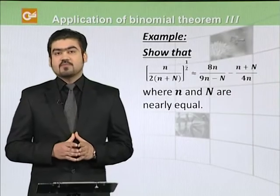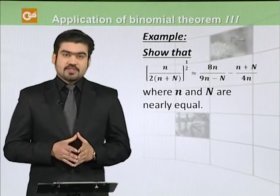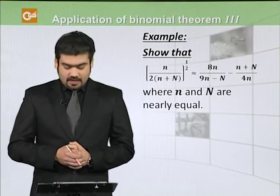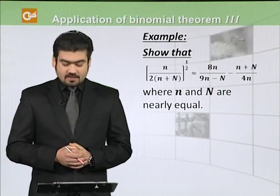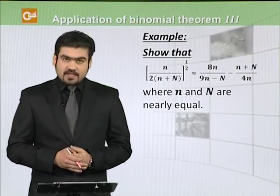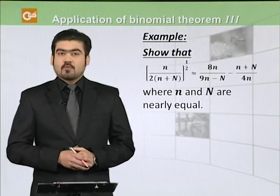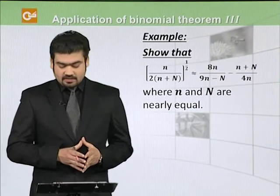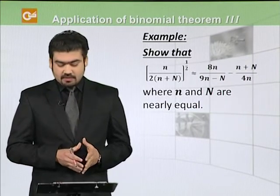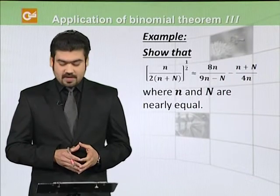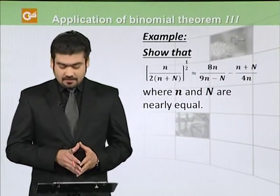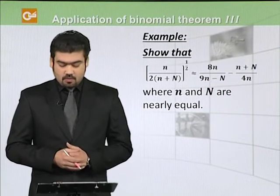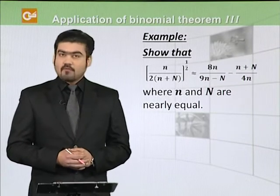Ab humare paas binomial expansion ki ek example hai. That is: n divided by 2, multiplied by (n plus capital N) whole raised to power 1 over 2. Hamna ye prove karna hai ki this is nearly equal to 8n divided by (9n minus capital N minus n), plus (capital N divided by 4n).